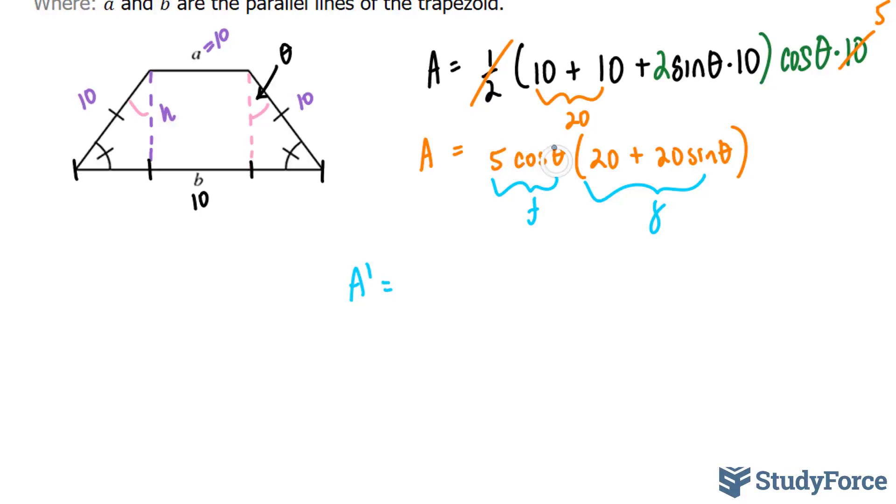A prime is equal to, let's find the derivative of that. The derivative of cosine theta is negative sine theta. So we have negative 5 sine theta, this part stays the way it is, plus this part now stays the way it is, and the derivative of 20 is 0, plus the derivative of 20 sine theta is 20 cosine theta.